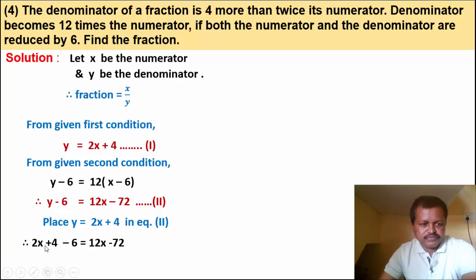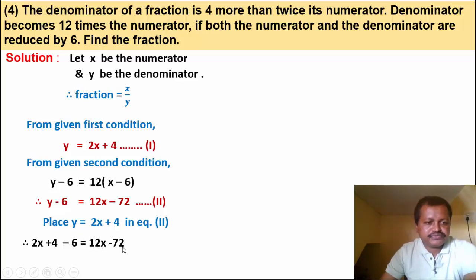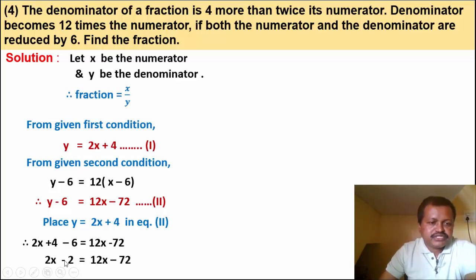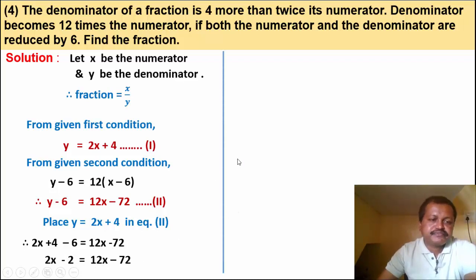Substituting: 2x plus 4 minus 6 equals 12x minus 72. Left side: 2x minus 2. So 2x minus 2 equals 12x minus 72.